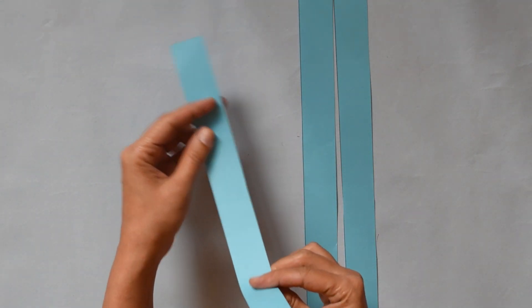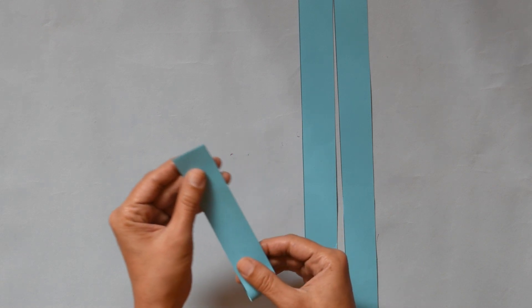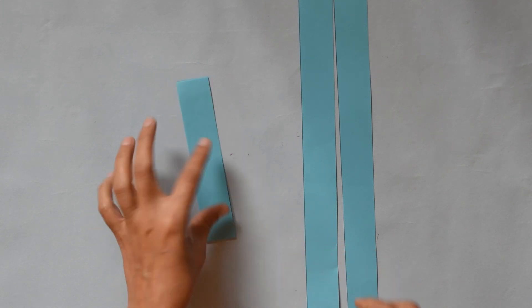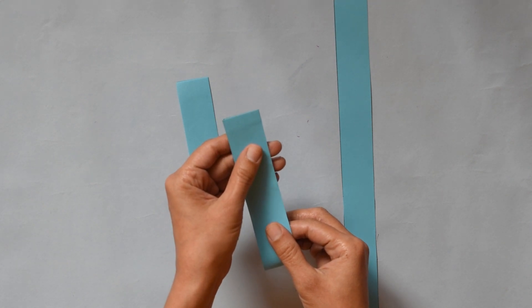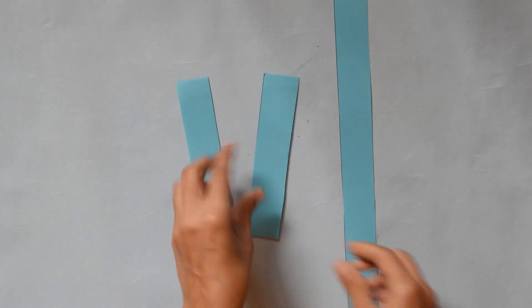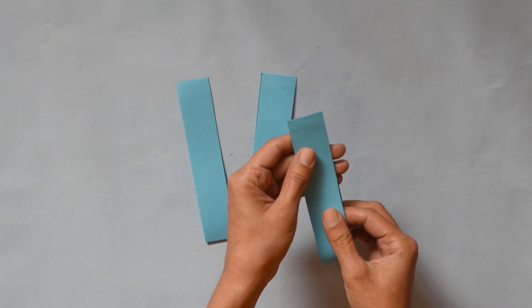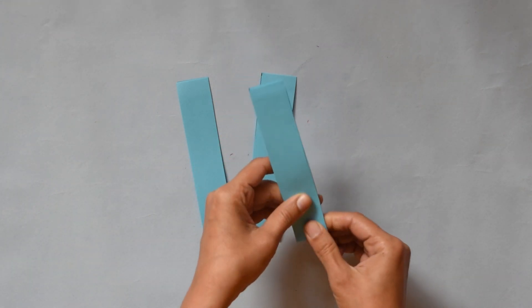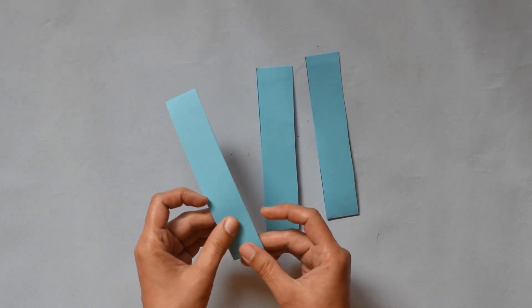Take 1 strip and fold it. Press here. Take another one. Fold it in the middle. Press it. Same with the 3rd strip. Fold in the middle. So now we have 3 strips and we fold them in the middle.